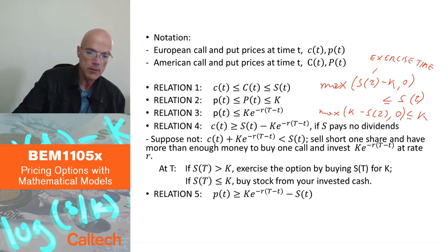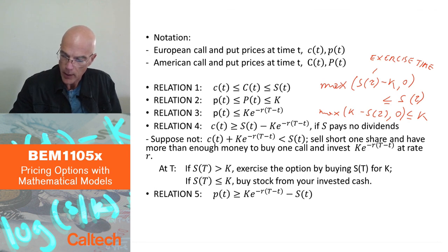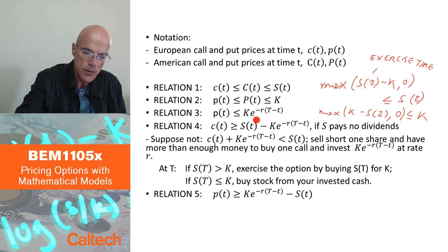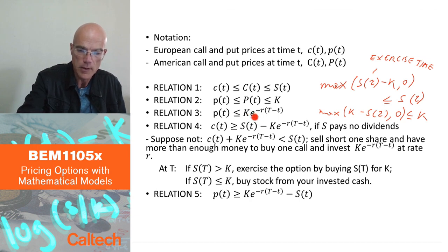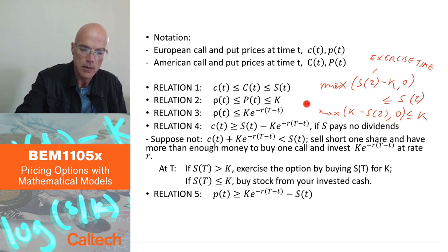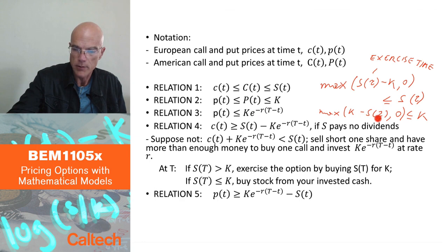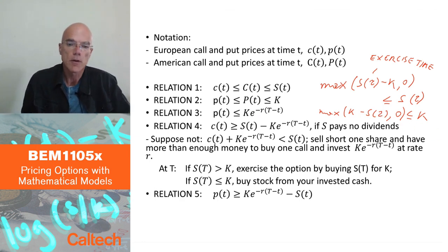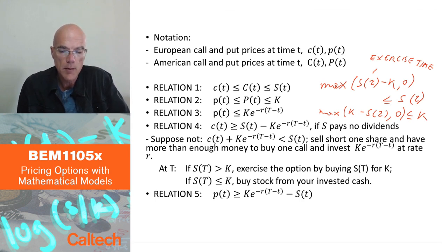In fact, for the European version — Relation 3 — the price actually has to be less than the discounted strike price. Why? Because with the European version I can only exercise at maturity, so if at maturity the payoff is less than K, today's price has to be less than or equal to today's value of K, which is simply the present value of K — discounted K using continuously compounded interest rate. For the American version I can only say the price is less than K, since it can be exercised right away with no discounting.